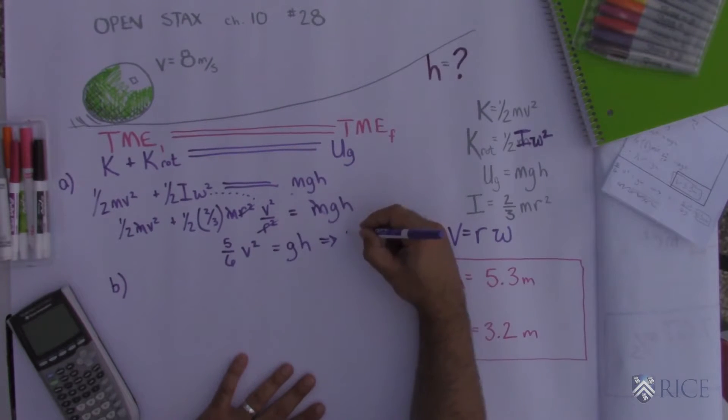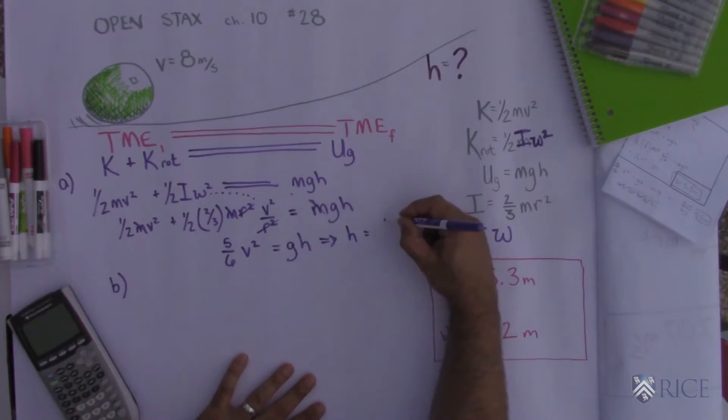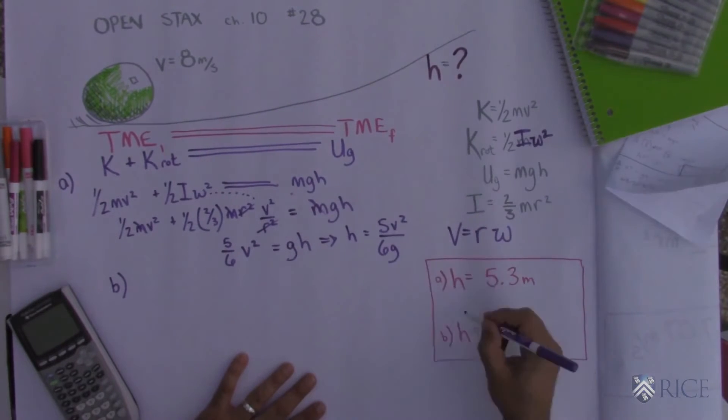So I'll rearrange this for you. Turns out that the height will be five v squared over six g, and that comes out to be 5.3 meters.